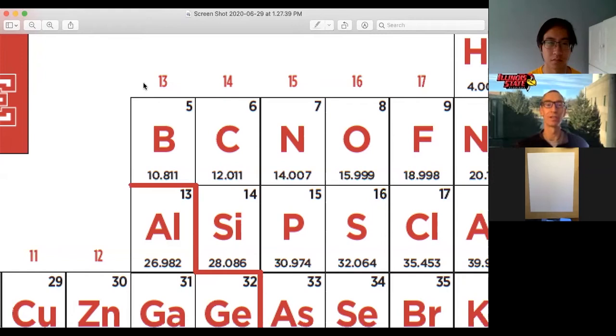So let's take a look at boron. For instance, boron has an atomic number of five and its mass number is 10.8. What that really means is that boron is made up of some borons that have five protons and five neutrons.